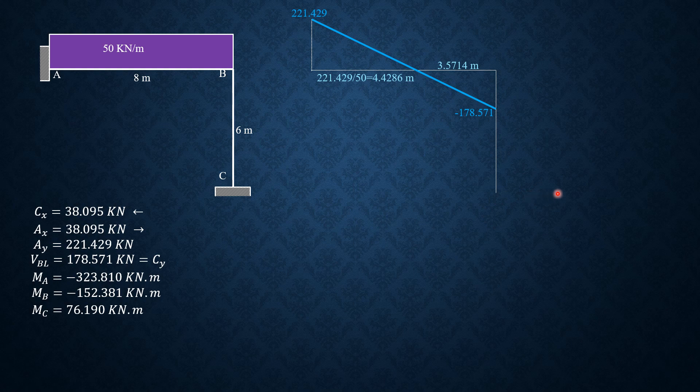Since Cx is leftward and this is the top fiber, we move to the right equal to 38.095. By the way, that's the area, that's the area also of this triangle.